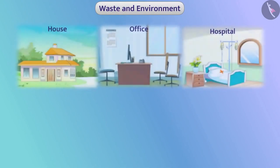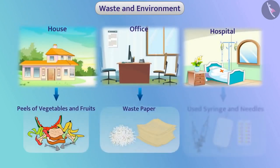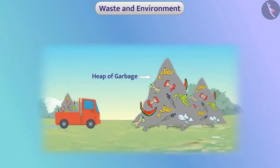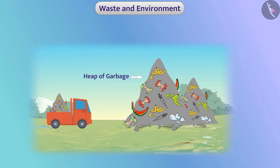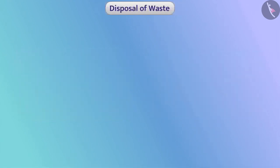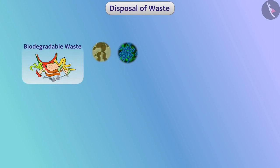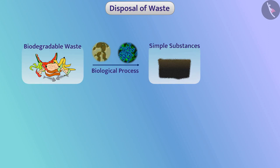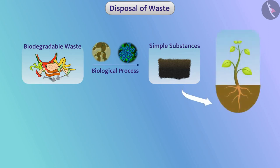With the improvement in our lifestyle, the quantity of waste has also increased. Waste is usually dumped in an open field for its disposal, due to which we see heaps of garbage in villages and cities. Generally, bacteria decompose organic degradable waste through the biological process and naturally convert these substances into simple substances, which are absorbed by plants. In this way, waste is disposed of naturally.